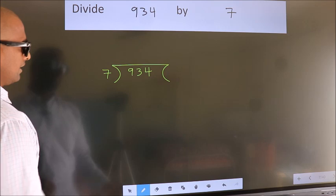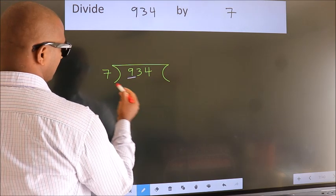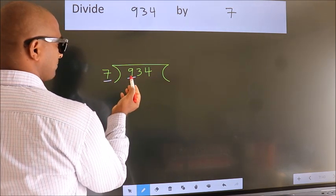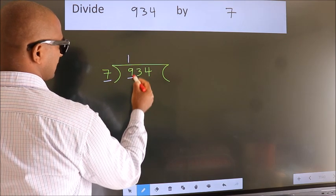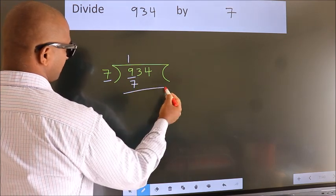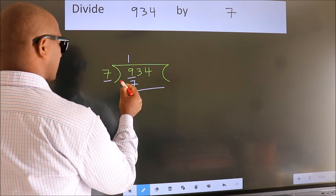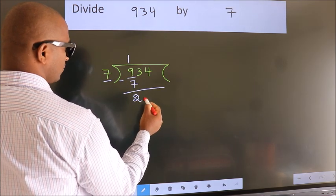Next, here we have 9, here 7. A number close to 9 in the 7 table is 7 once 7. Now we should subtract. We get 2.